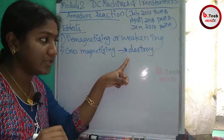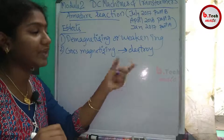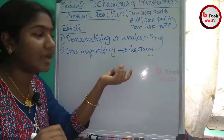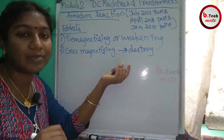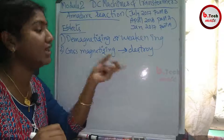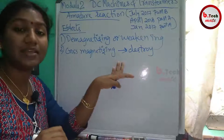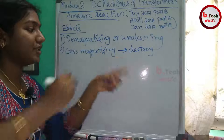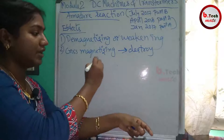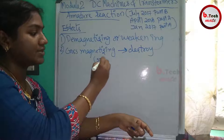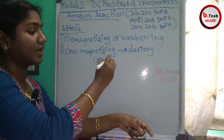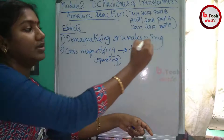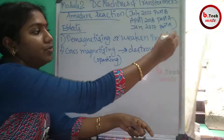The distortion caused by the armature flux leads to sparking at the commutators and brushes. The Cross Magnetizing effect causes sparking, while the Demagnetizing effect reduces the generated EMF (EG).